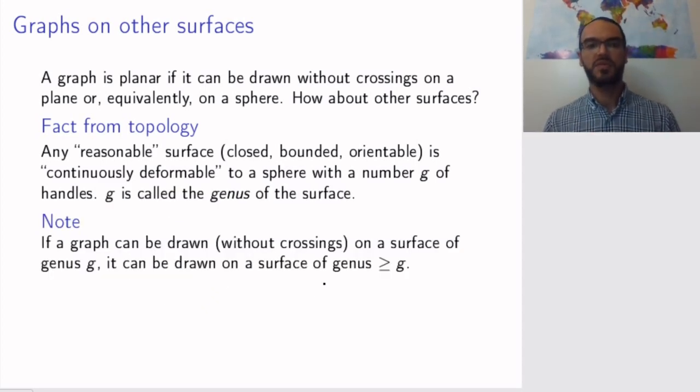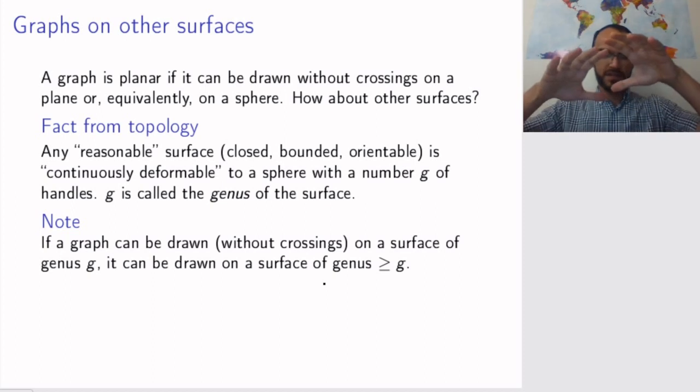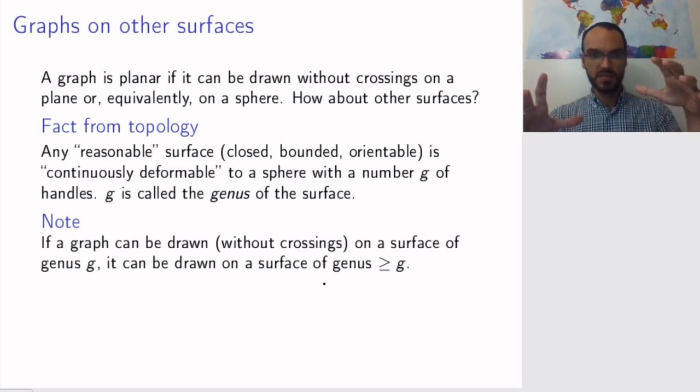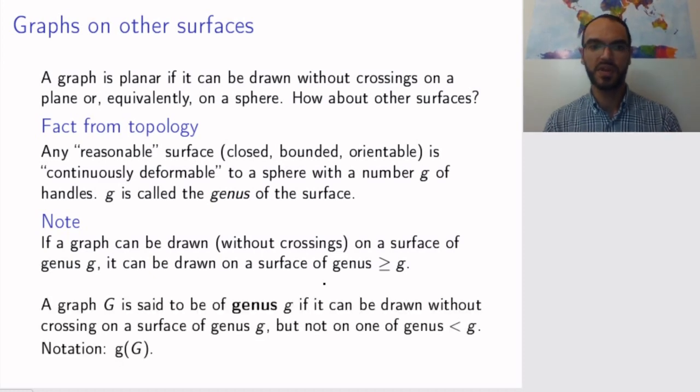So now we want to draw our graphs on spheres with a certain number of handles. By the way, the number of handles is called the genus of the surface. If you can draw a graph without crossings on a surface of genus g, you can certainly draw it on surfaces with higher genus. If you can draw your graph without crossings on a surface with seven handles, then placing an eighth handle, just make sure to draw your graph so that the face of the graph encompasses this eighth handle. But if you take away handles, maybe things will not work anymore. So a graph is said to be of genus g if it can be drawn without crossing on a surface of genus g, but not on a surface of lower genus.